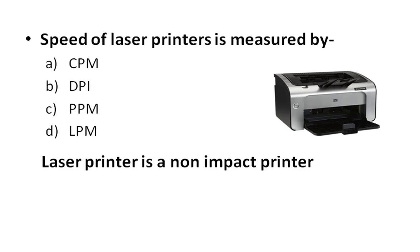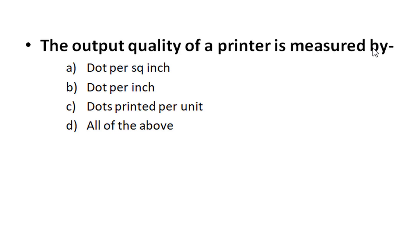The speed of a laser printer is measured by which unit? The options are: Character per minute, Dot per inch, Pages per minute, and Line per minute. The right answer is Pages per minute. Printers are of two types: impact printers and non-impact printers. An impact printer creates noise during printing, while a non-impact printer does not.